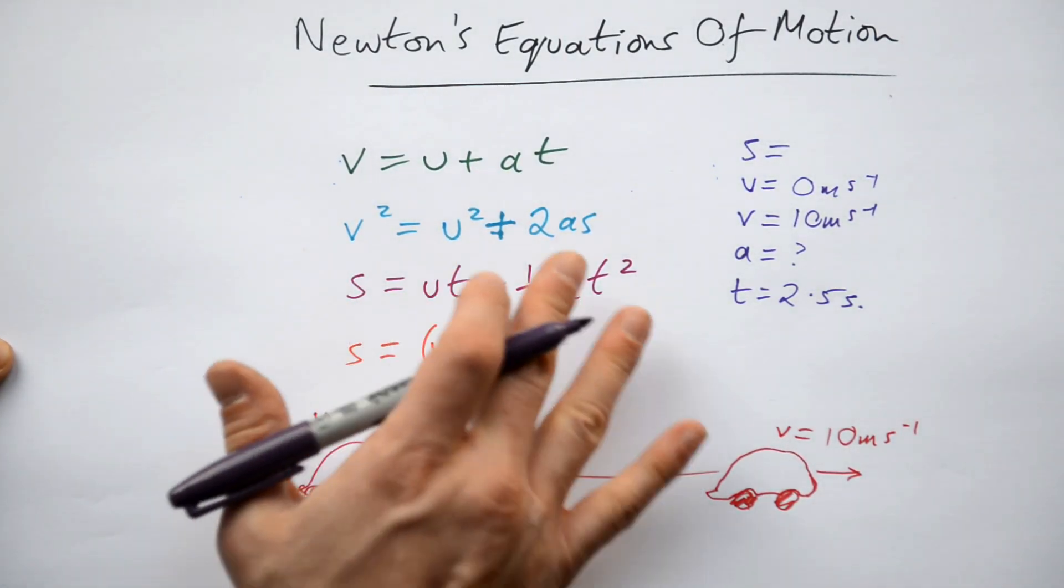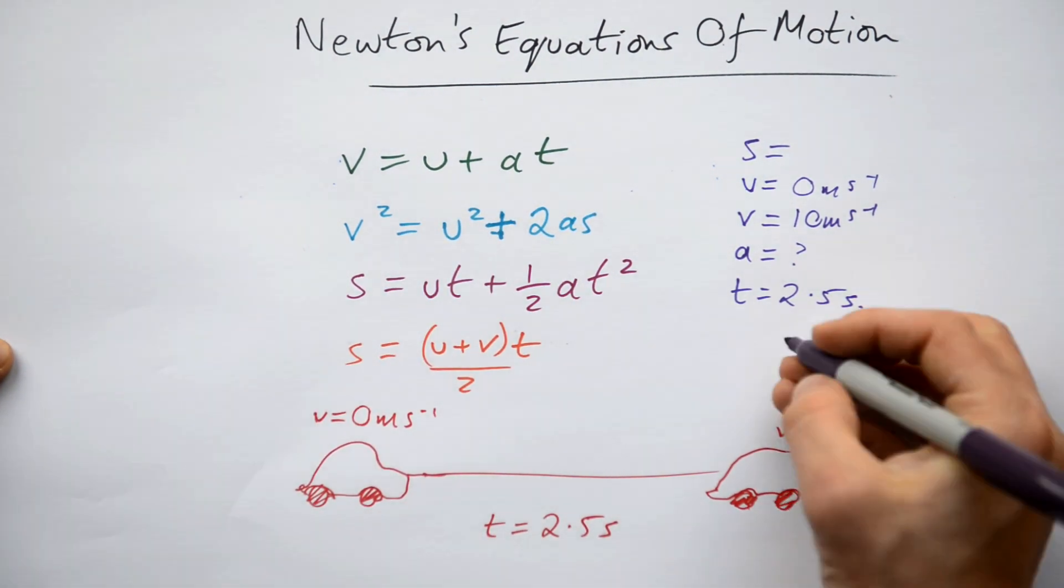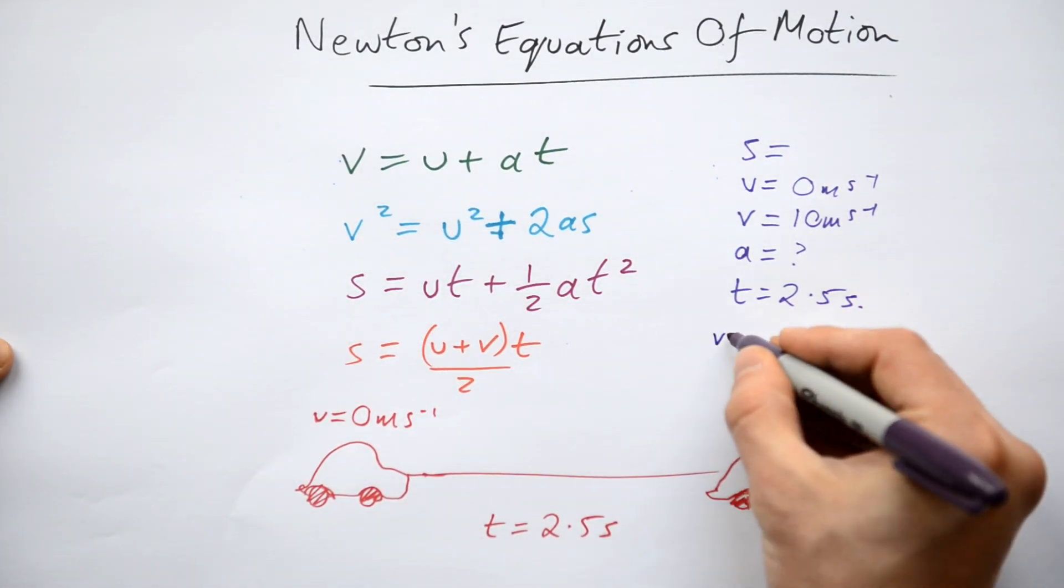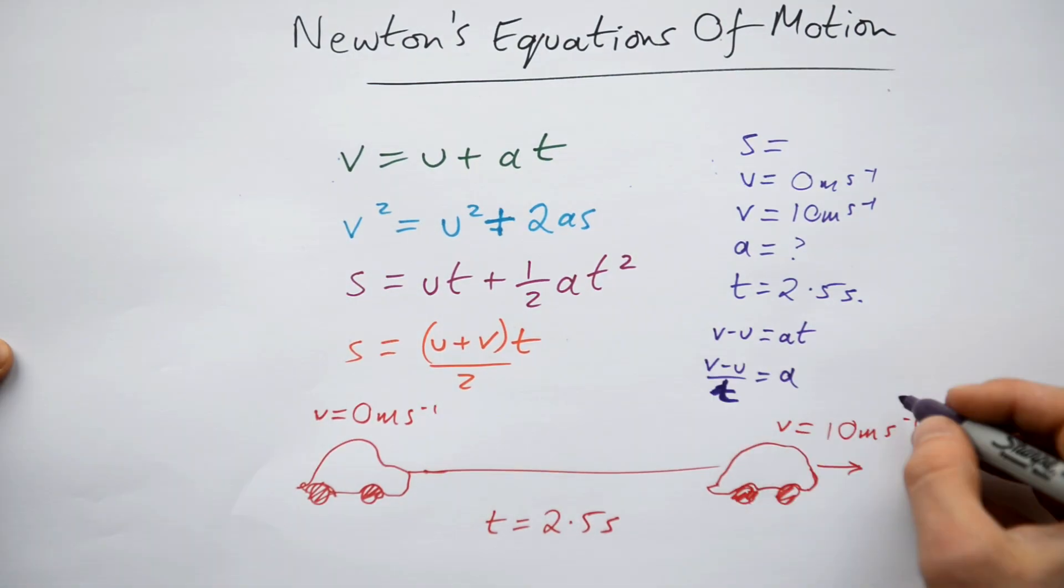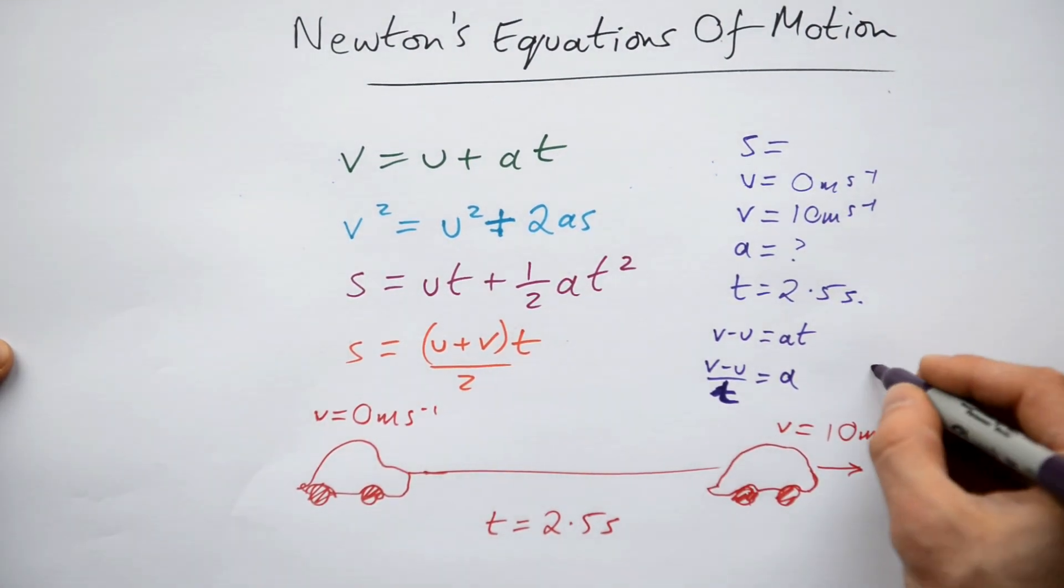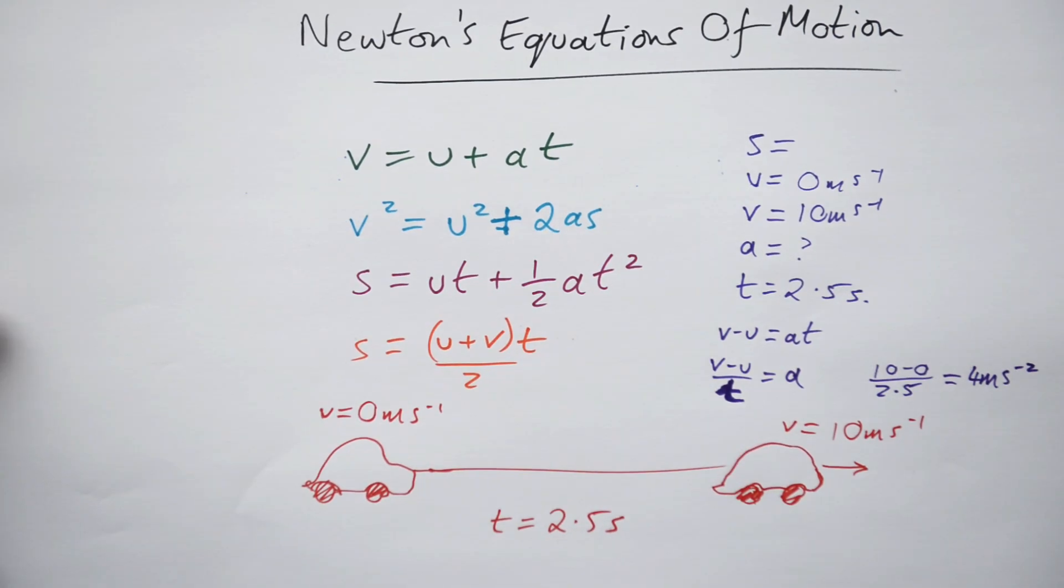Can I use it straight away? Well, not really, because I need to make acceleration A the subject if I'm going to actually find it out. So all I do is rearrange it, so that's going to be V minus U equals AT. I'm doing it one step at a time, and then finally plug that into your calculator, and we get 10 minus 0, that's just 10, divided by 2.5, that's going to give us an acceleration of 4 meters per second squared.